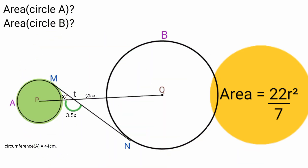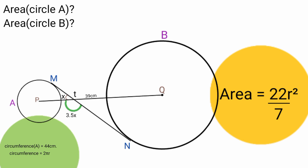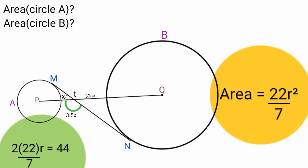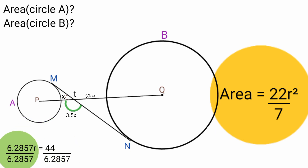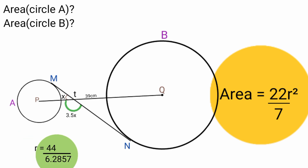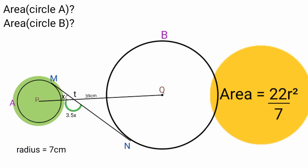Since we have the circumference of circle A to be 44 centimeters, and the formula for the circumference of a circle is 2 pi R, we can find the radius by equating 44 centimeters to 2 pi R. So 2 times 22 over 7 times R equals 44 centimeters. That gives 6.2857 R equals 44. Dividing both sides by 6.2857, we get R equals 7. So the radius of circle A is 7 centimeters.